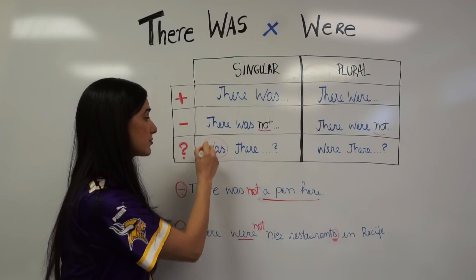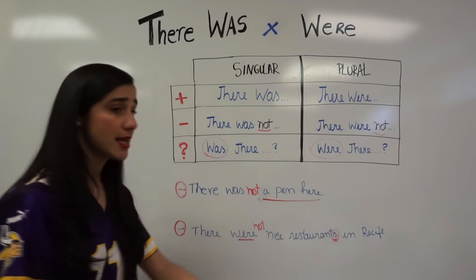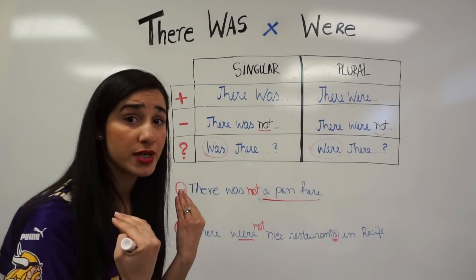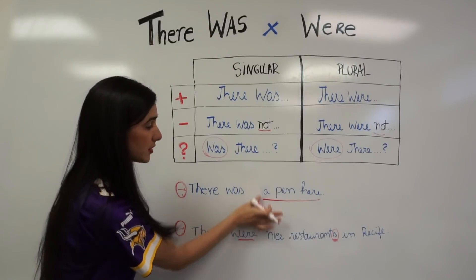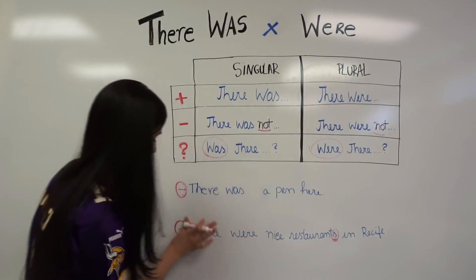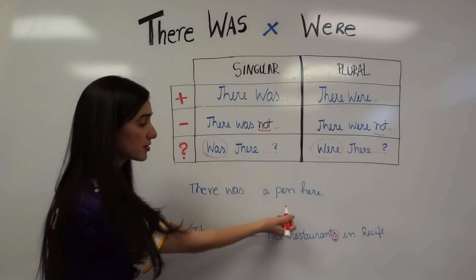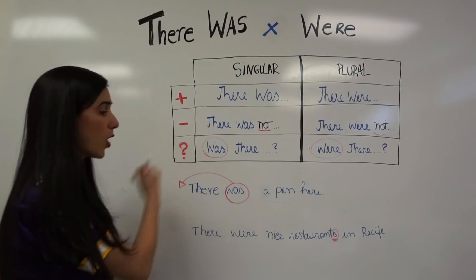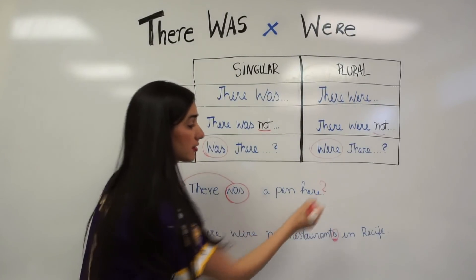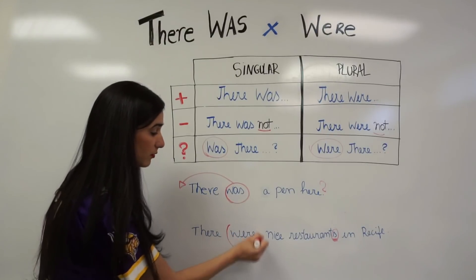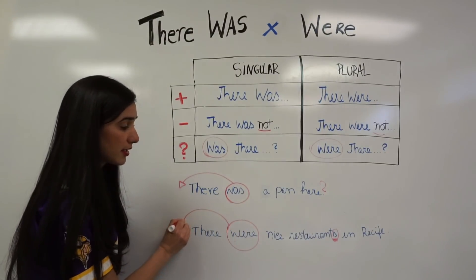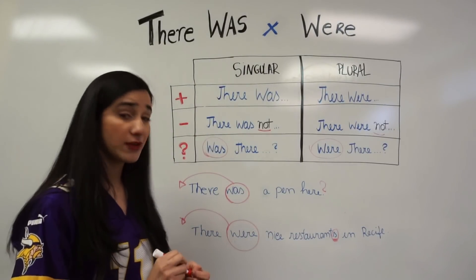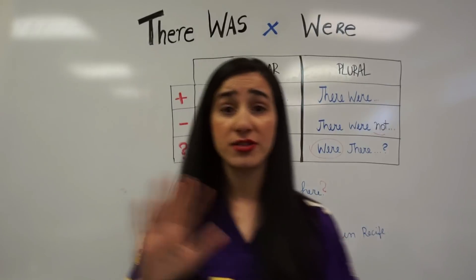To form a question, take the verb 'to be' in the past — 'was' or 'were' — and put it first, before 'there.' So 'There was a pen here' becomes 'Was there a pen here?' And 'There were nice restaurants in Recife' becomes 'Were there nice restaurants in Recife?' That's how you form a question — it's very easy!